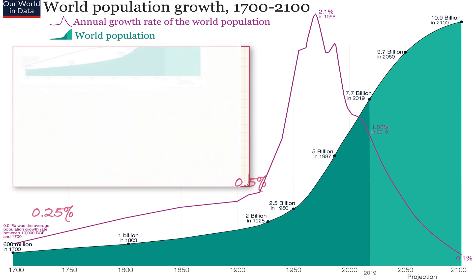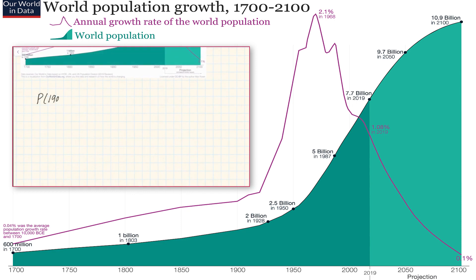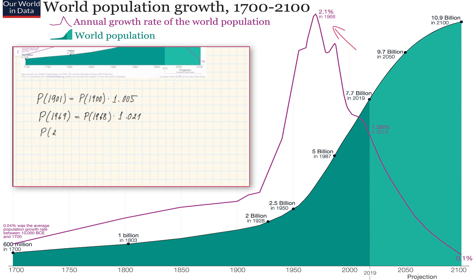What this means is that, for example, the population in 1901 was equal to the population in 1900 times 1.005 approximately — corresponding to half a percent growth. The population at 1969 would be the population at 1968 times 1.021, corresponding to 2.1%. And the population in 2020 would be the population in 2019 times 1.0108, which is about 1%. So the growth looks exponential — we multiply by some growth factor every year — but that growth factor is changing year by year.